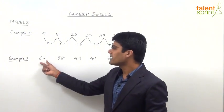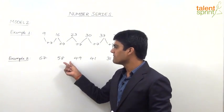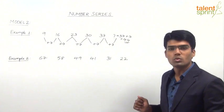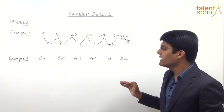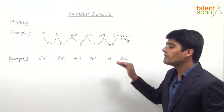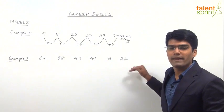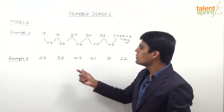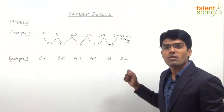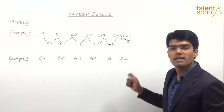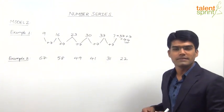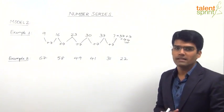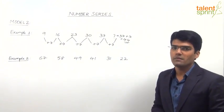Let us now look at the next example: 67, 58, 49, 41, 31, 22. Here we are supposed to find out which of the given numbers is wrong — not a missing number, but which number does not fit in this series. Again, we need to identify the logic behind the given numbers.